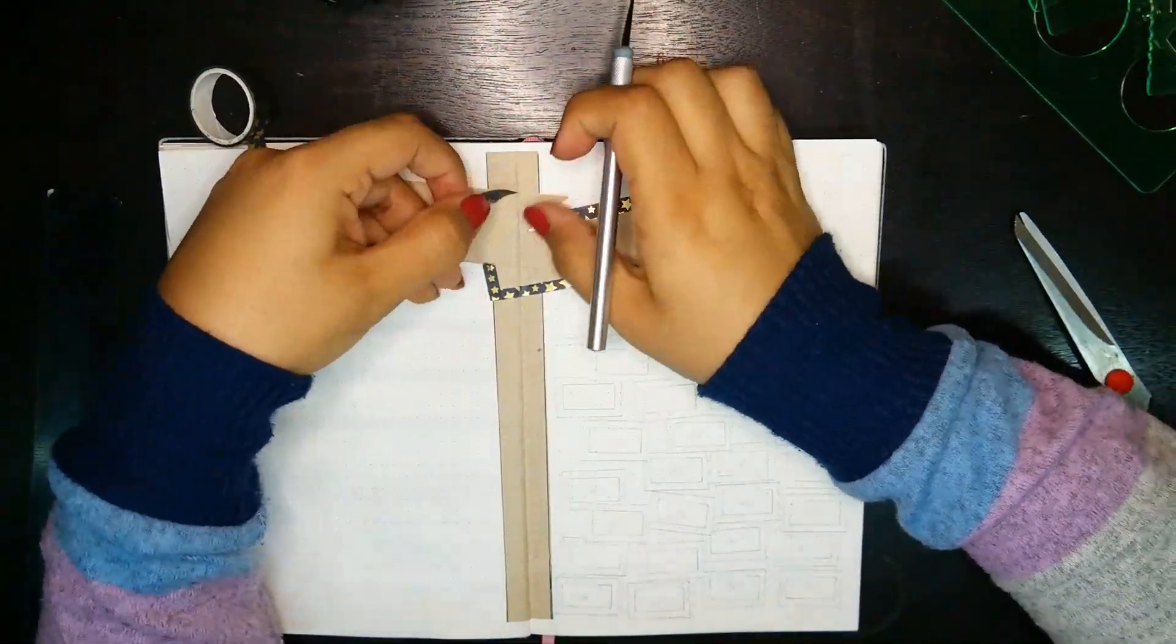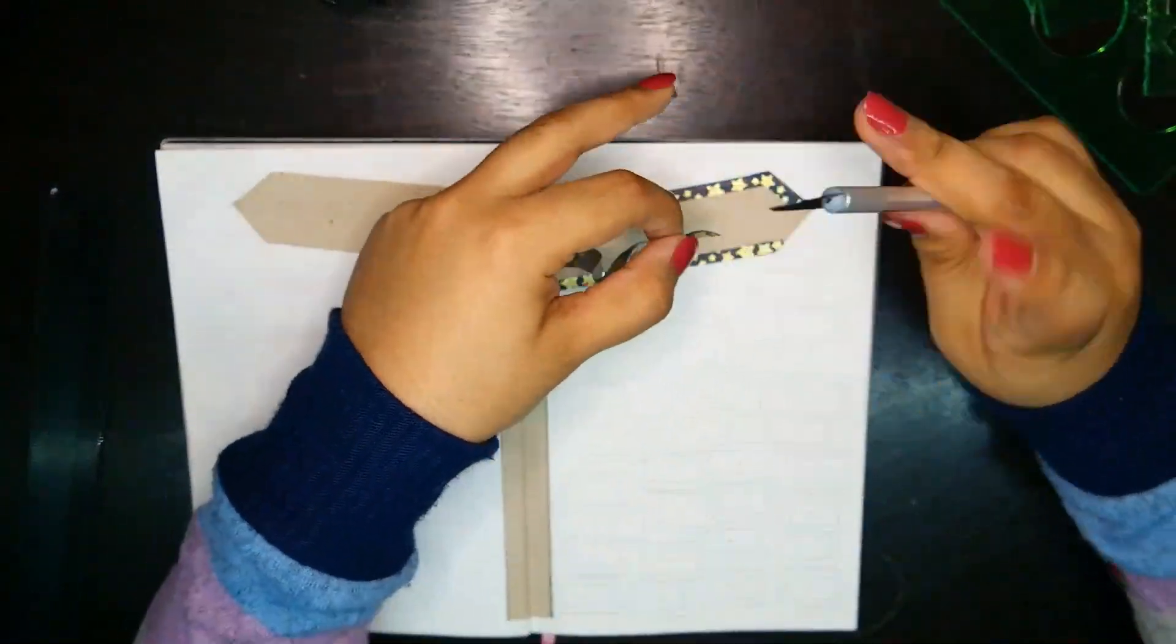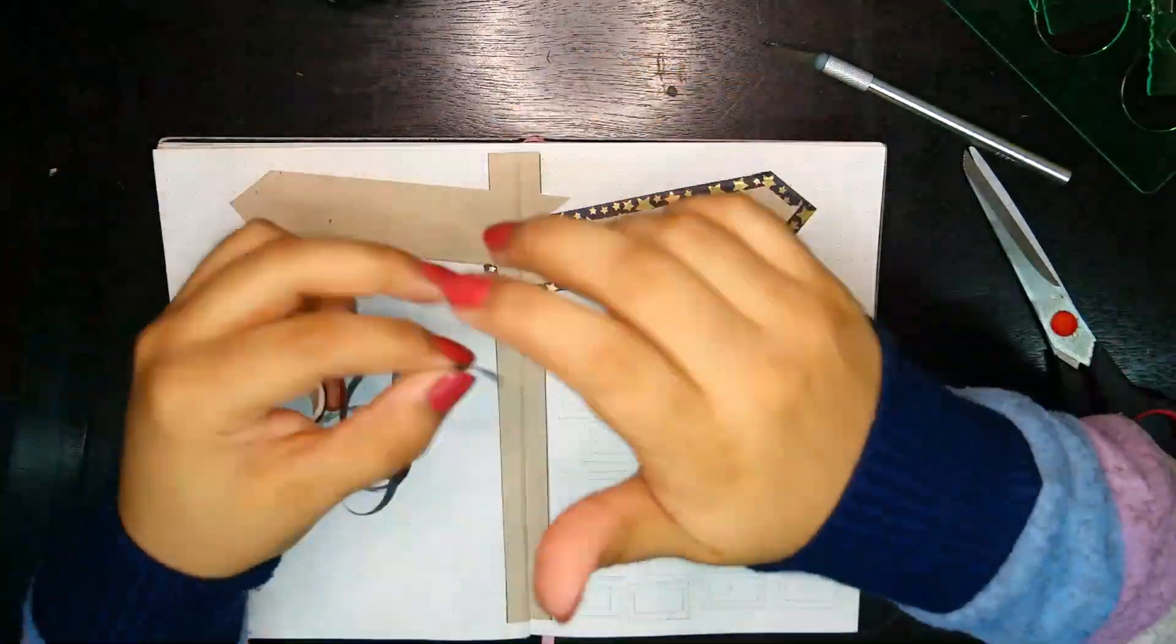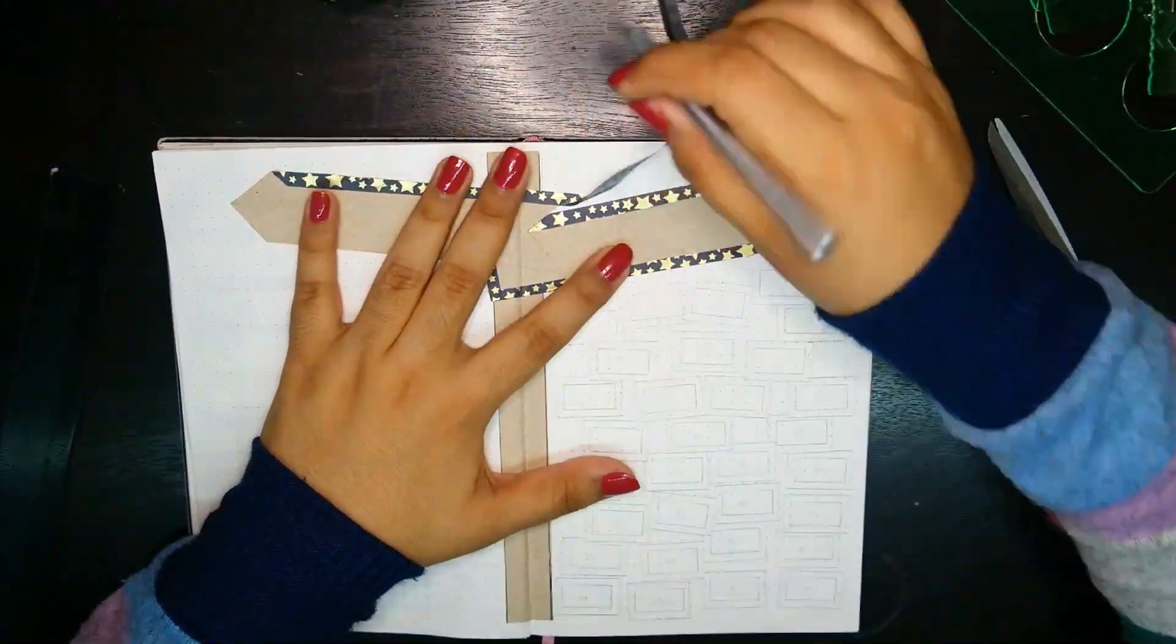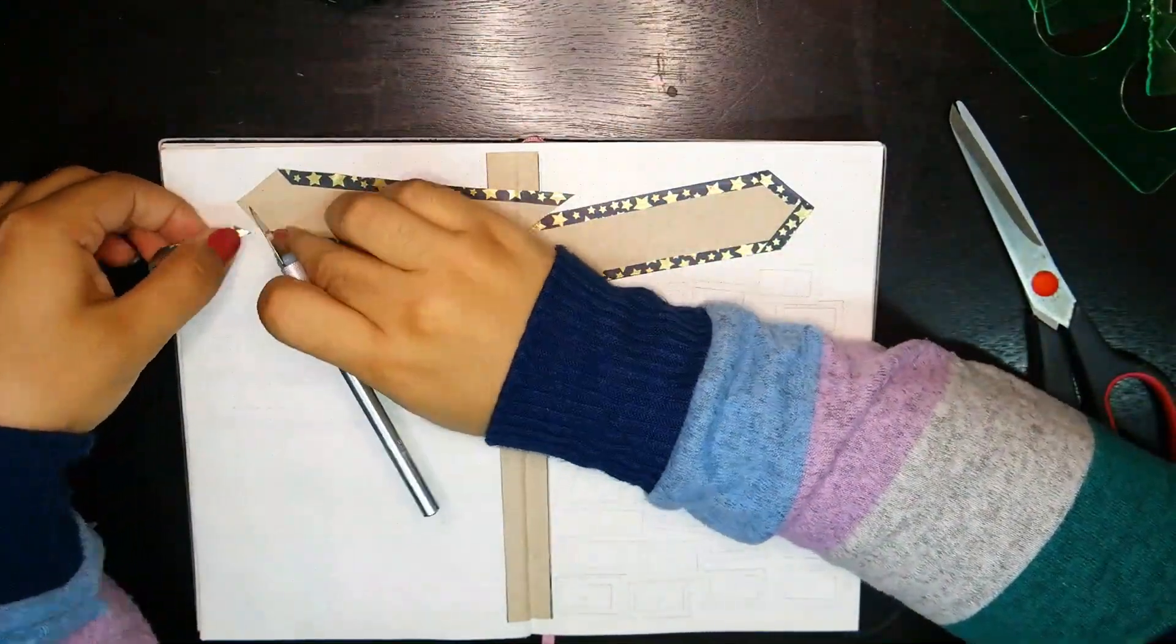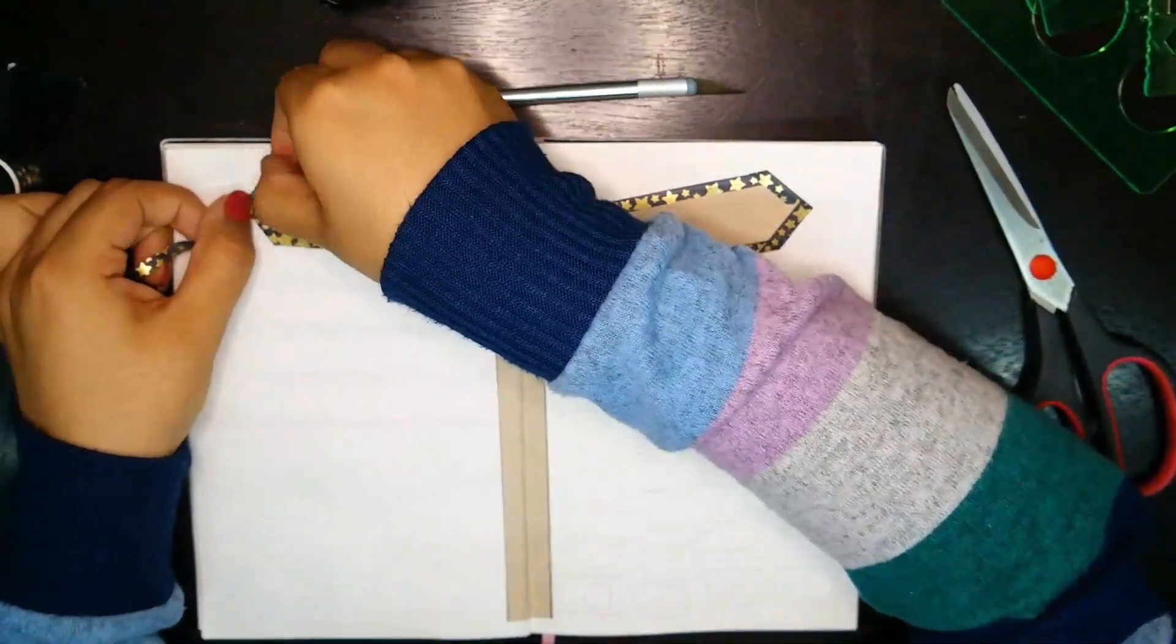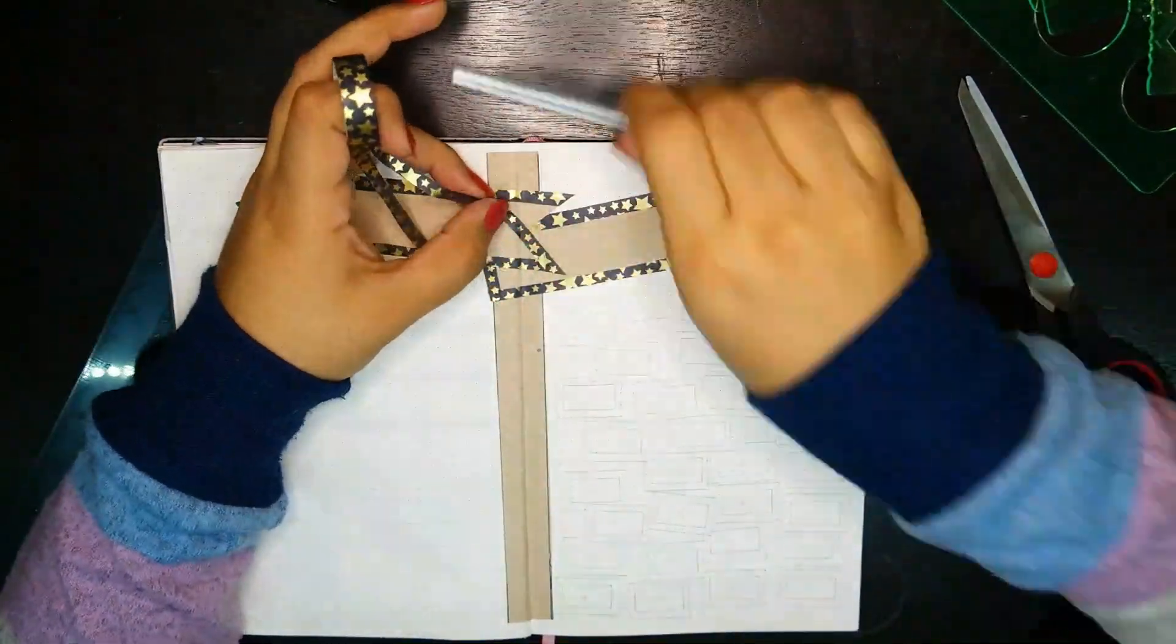To make the pointers fancier, I used the star washi tape as an outline. Since the tape was rather thicker than I needed it to be, I cut it in half and started placing it in the pages with the help of an exacto knife. I thought about hand drawing the outline with fancy designs, but since I already had the washi tape, I just ran with it. I think both options would have taken the same time, but this way makes the spreads really pop in my opinion.